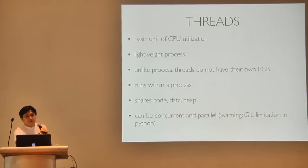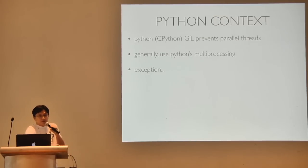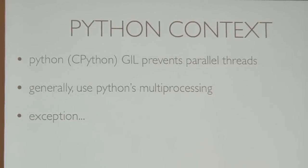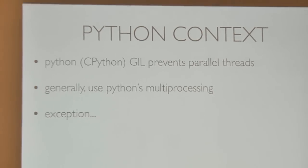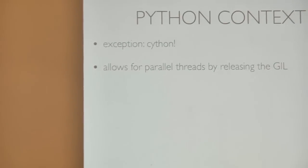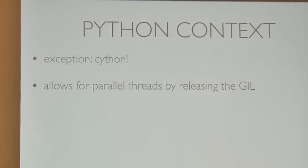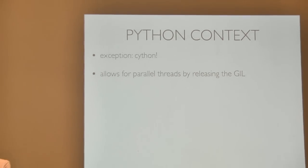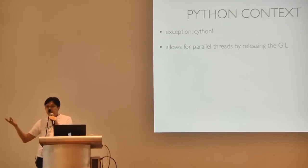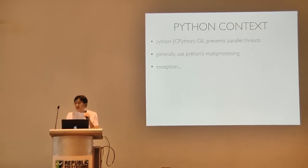There's an exception to Python's lack of ability to do parallel multi-threading — it's Cython, which allows parallel threads by releasing the GIL. Cython has a parallel function that calls a no-GIL function that releases the GIL, and then your Python code runs on C and executes in parallel. Other than that, if you're using CPython, you can't have parallel threads.